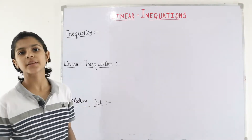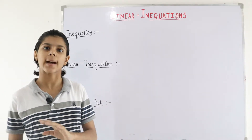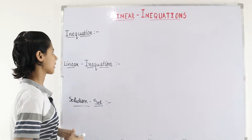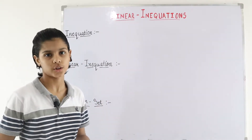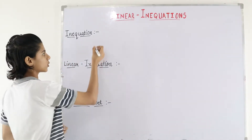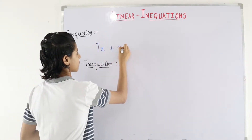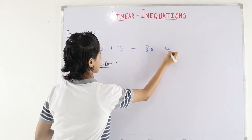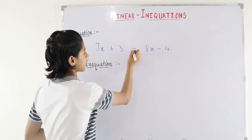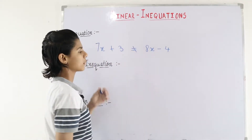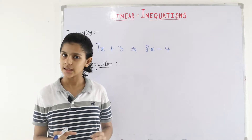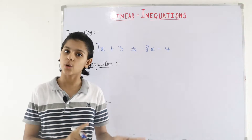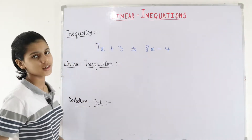In the previous video, we discussed what an equation is — a statement of two algebraic expressions. In inequation, we take the same example: 7x plus 3 and 8x minus 4. It means that in two algebraic expressions, a statement of inequality is present — both expressions are not equal. That is a statement of inequality, and that's why it is known as an inequation.